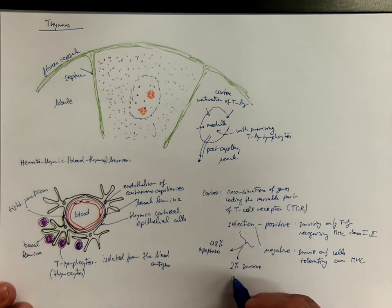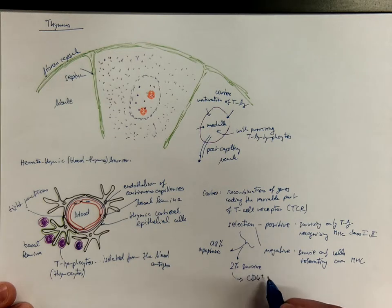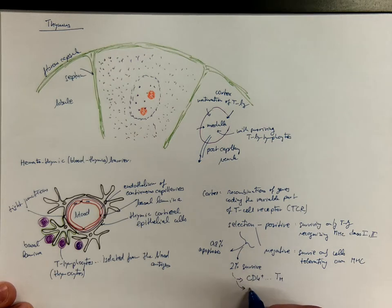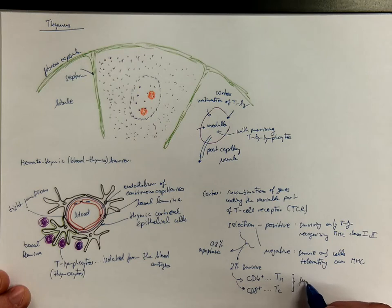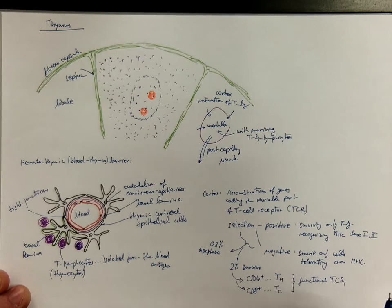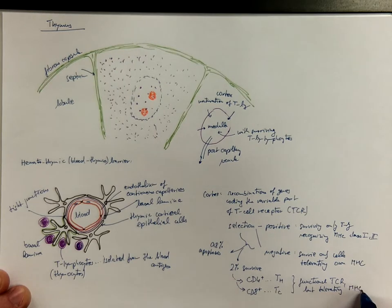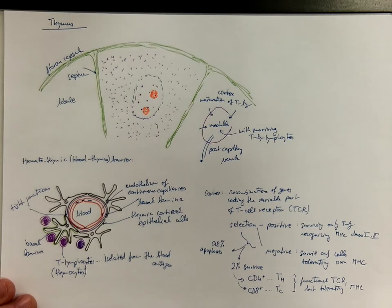Only 2% of T lymphocytes survive this training. These are cells that will retain either the CD4 molecule—we call them CD4 positive, they will become T helpers—or CD8 molecule on the surface—they will become T cytotoxic lymphocytes. They have to possess a functional T cell receptor but at the same time be tolerating MHC to prevent autoimmune response.